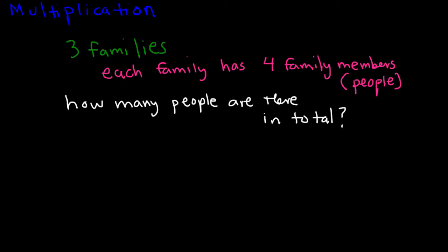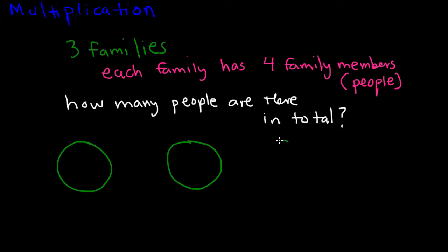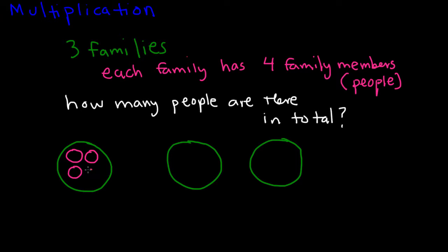Let's start off and draw the three families. I have one family, I have two families, and I have three families. Each family has four family members, so I'm going to put four family members in each of these families. So I have one, two, three, four.